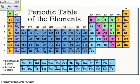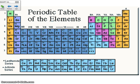Here's your periodic table. You can see that some elements have one letter: boron, carbon, nitrogen, oxygen, phosphorus, sulfur — one letter each. A lot of the metals have two letters — copper is Cu, zinc is Zn. The second letter is always lowercase.